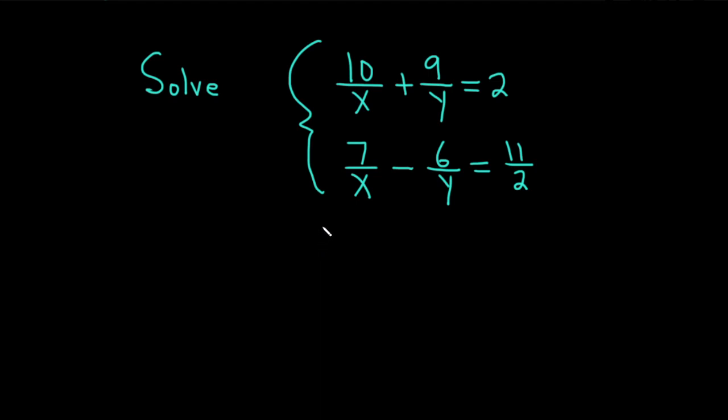Hello, in this video we're going to solve a system of equations. We have 10 over x plus 9 over y equals 2, and 7 over x minus 6 over y equals 11 over 2. Let's go ahead and work through it.